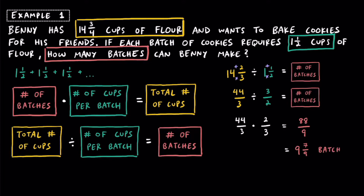That would be the exact number of batches Benny could make using all the flour he has, assuming none is left over. While Benny can make exactly 9 and 7 ninths batches, he can really only make 9 whole batches before he runs out of flour — he doesn't have enough to make a tenth batch.